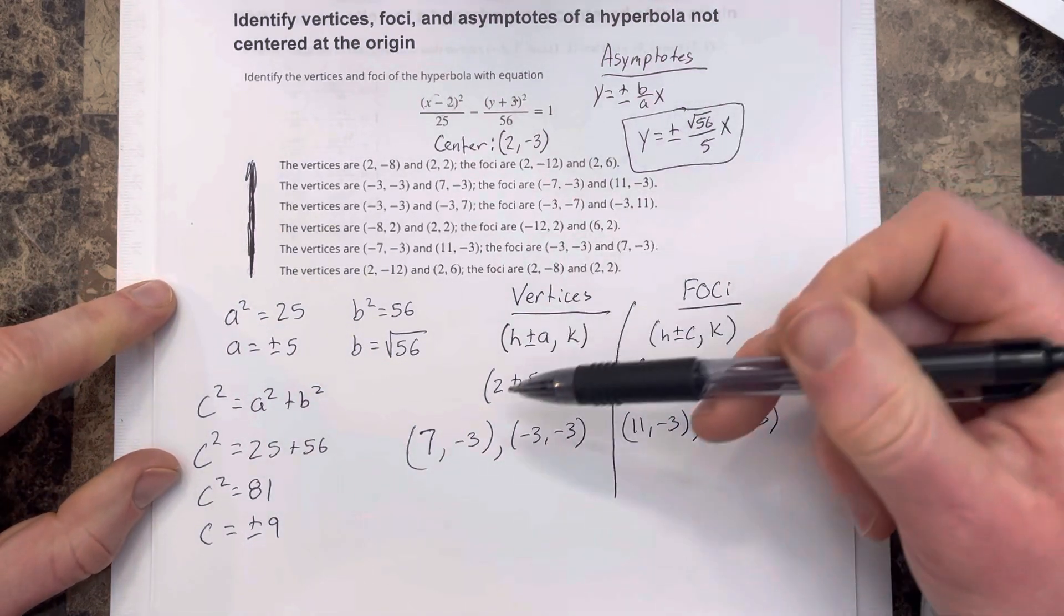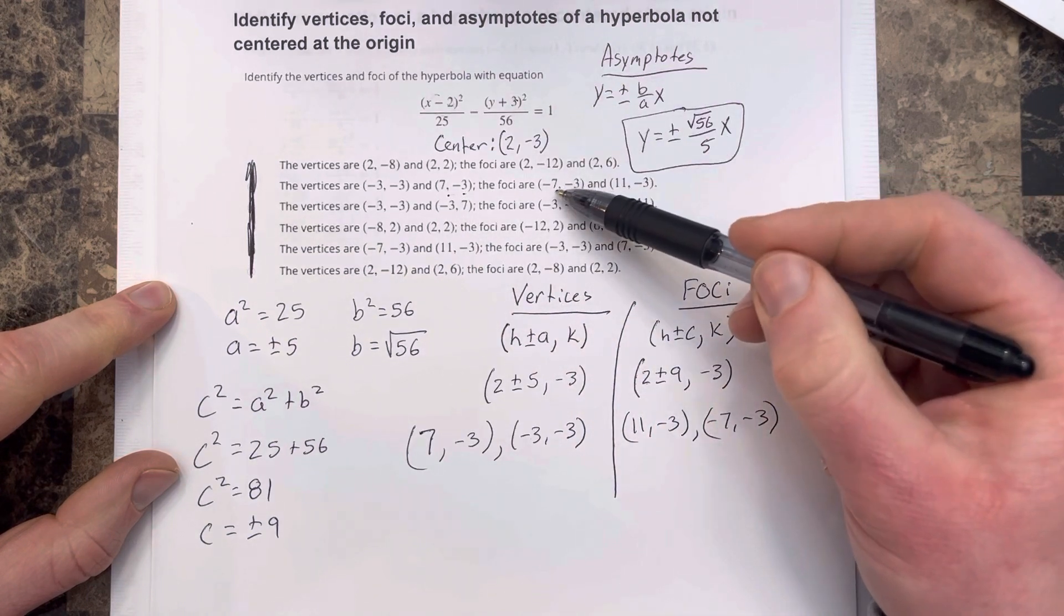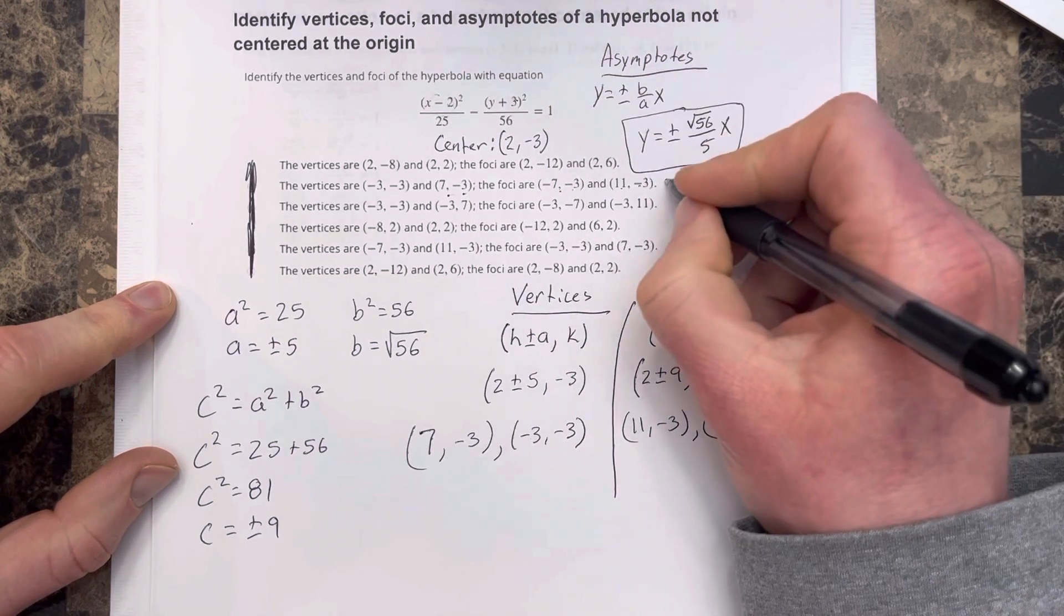And then which option of these would work? So negative 3, negative 3, 7 negative 3, and negative 7, negative 3, and 11, negative 3, that would be the second option there.